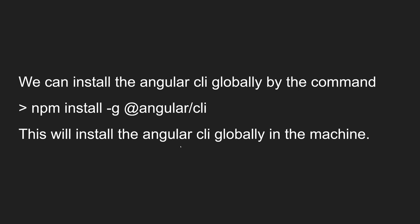Now Node is installed, so it's time to install Angular CLI. We can install Angular CLI globally using the command: 'npm install -g @angular/cli'. The '-g' flag stands for global, or you can also use '--global'. This installs Angular CLI globally on your machine, not specific to any project or application.